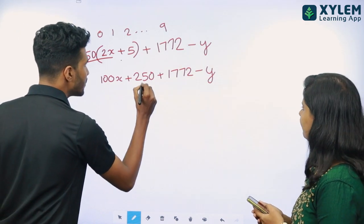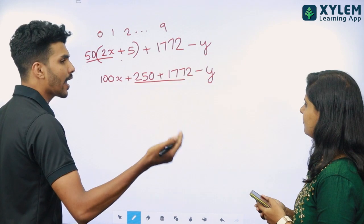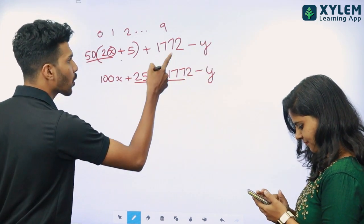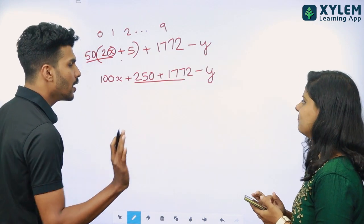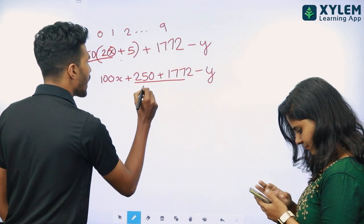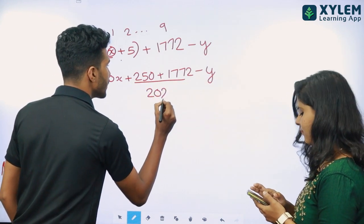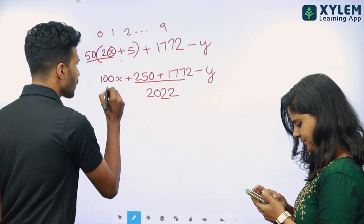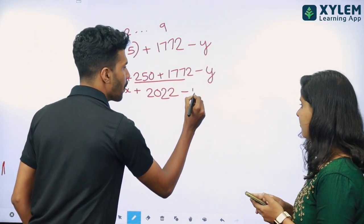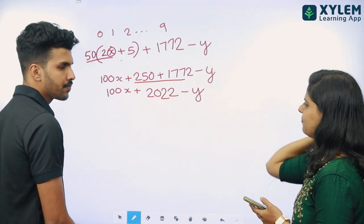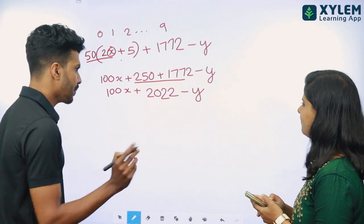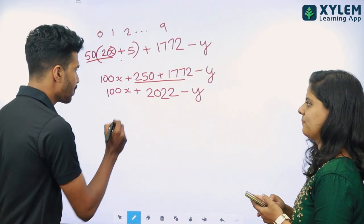Now, 1772 — I call it a parallel. That's why I call it the number. It's the same way. If you call it the number of 3-digit number, we can calculate the number of 3-digit number. So, I call it the number of 2022. That's the same way. 100x plus 2022 minus y. I call it the number of mobile number.